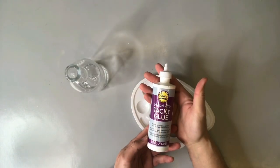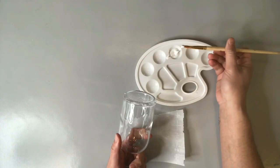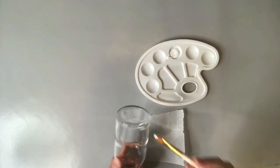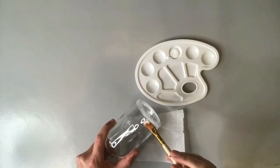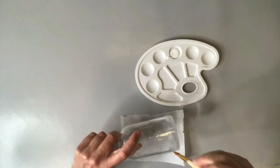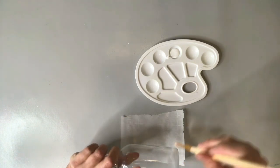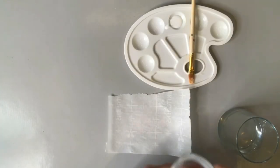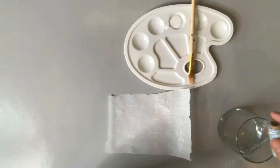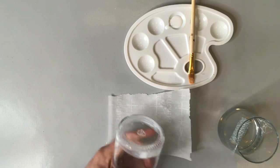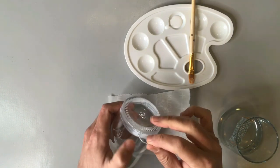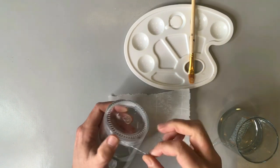We're going to apply some tacky glue at the base of our bottle and from there we're going to start attaching our Baker's twine wrapping it around the base. In place of the tacky glue I suppose I could have used some Mod Podge or other thick decoupage glue, but I decided to go with tacky glue just because I thought it might be a little stronger.